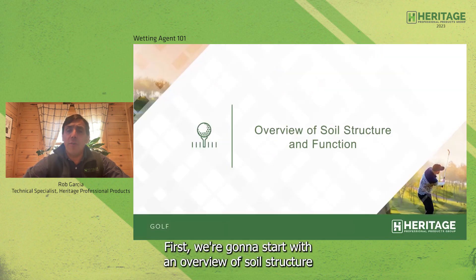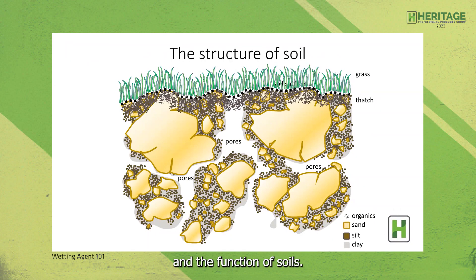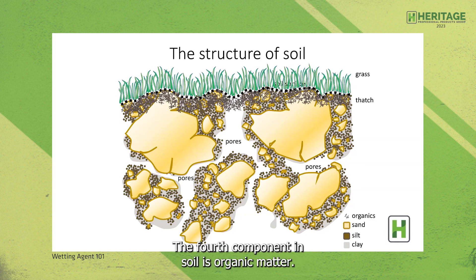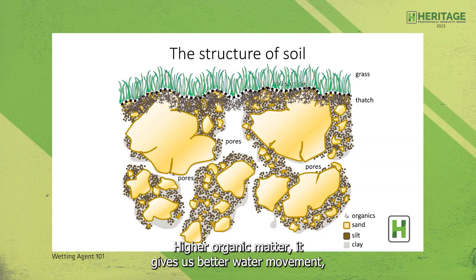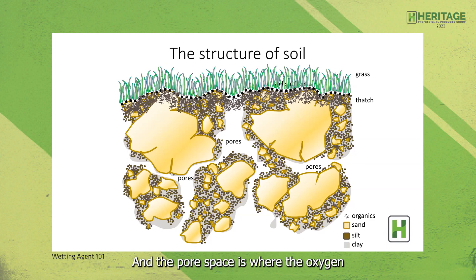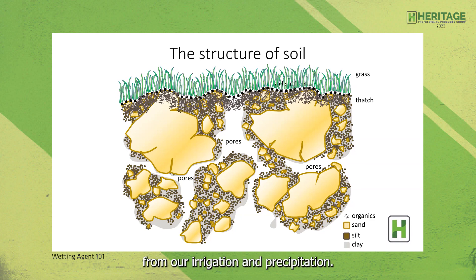We're going to start with an overview of soil structure and the function of soils. The three main soil particles are sand (0.05 to 2 millimeters), silt (0.002 to 0.05 millimeters), and clay (0.002 down to microscopic-sized particles). The fourth component is organic matter, between 2% and 10%, which gives us better water movement, better overall water-holding capacity, and a more flocculent soil type. Pore space is where oxygen necessary for healthy plant growth and water from irrigation and precipitation is stored.